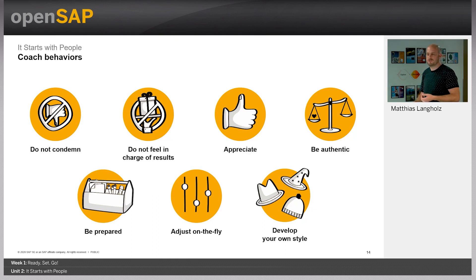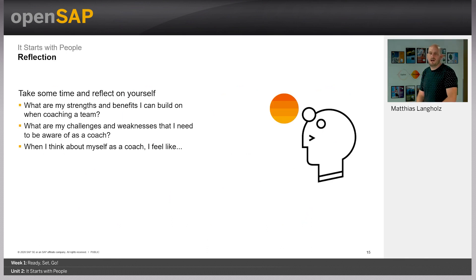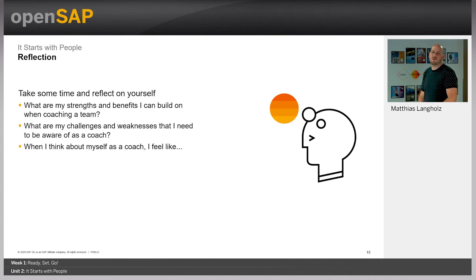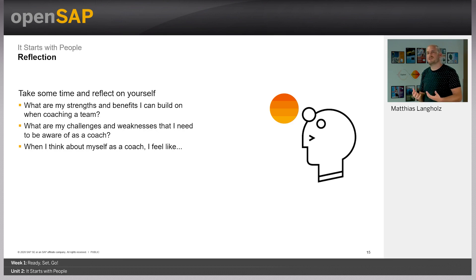Now another moment to reflect — press the pause button. If you would be a coach, what do you think your strengths would be? What could you help your team with? What would be challenging for you — what weaknesses do you have? And overall, when you think about yourself as an innovation coach, how do you feel? It's also okay if you feel that's not the role you'd like to have. Just take a minute, reflect, maybe take some notes, and then continue.